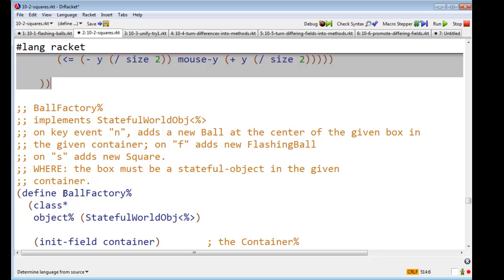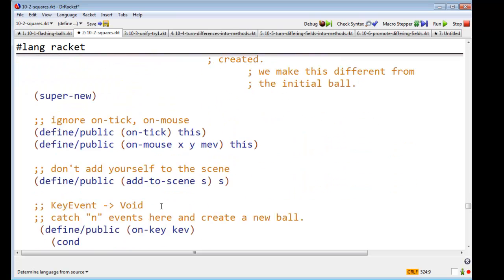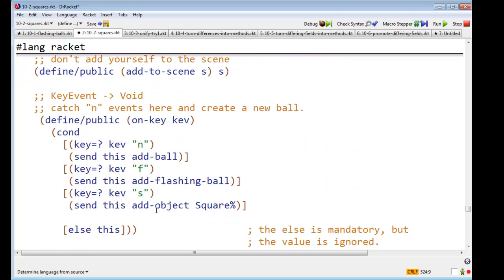Let's see, ball factory. It's no longer just a ball factory. It's now a ball and square factory, but I didn't change the name. The only thing that's changed is now I say, if the key event is an s, send this add-object square.